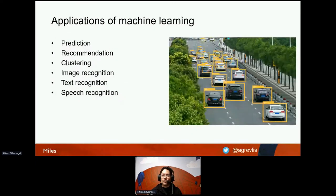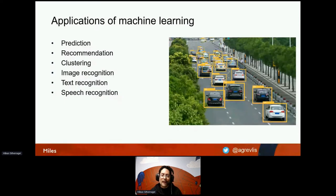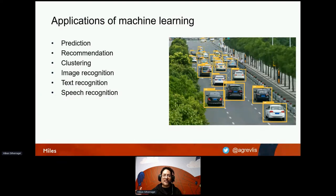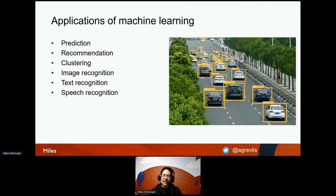Some of the ways we can use machine learning today include prediction — a classic example is using a dataset with house information such as year built, size, number of rooms, and neighborhood to predict how much a house will cost on the open market. We also have recommendation engines, like when you visit a web store and see suggestions for items that people who bought the same item also purchased. There's also clustering, where you divide customers into smaller groups to send more targeted information. And there's image recognition, text recognition, and speech recognition.